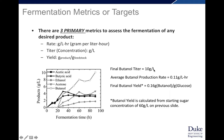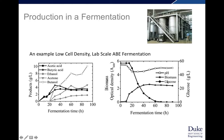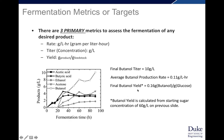For example, we have a final butanol titer of 10 grams per liter — butanol is the white square — which accumulates over time to a final concentration of 10 grams per liter. The average butanol production rate is 0.11 grams per liter per hour, taken as the average: the titer at the end divided by the total time — 10 divided by 90 hours equals 0.11. The final butanol yield is calculated using glucose data: starting at around 60 grams per liter of glucose, ending with 10 grams per liter of butanol, giving a yield of 0.16. This doesn't account for potential volume changes, which you would need to consider in an accurate yield calculation.